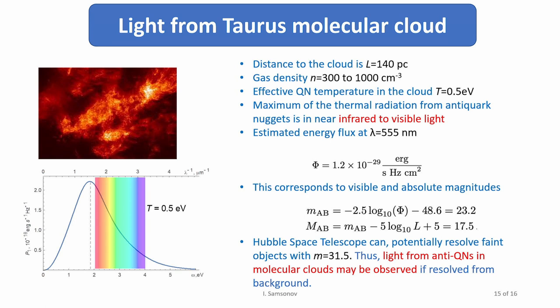For instance, we can consider radiation from large molecular clouds in the galaxy. In our paper, we considered the Taurus molecular cloud because it's very well studied in astronomy. The density of this cloud is quite well known. We took the density of gas in this cloud and we estimated the density of dark matter particles. Then we found the effective temperature of quark nuggets in this cloud. It happens to be about 0.5 electron volts. This is the spectrum which each particular quark nugget can produce. It happens that the spectrum is pretty close to the visible spectrum. Actually, large part of the spectrum is in infrared and visible spectrum.